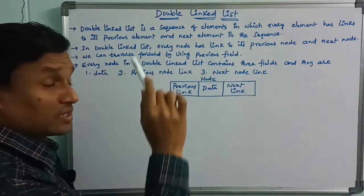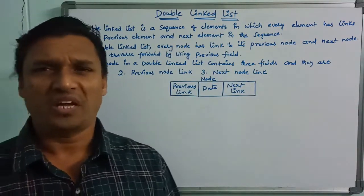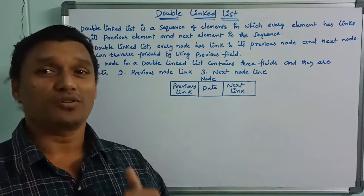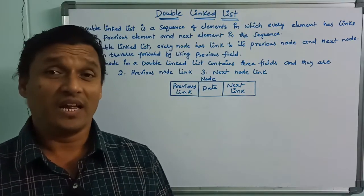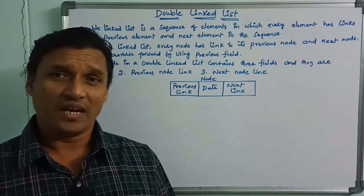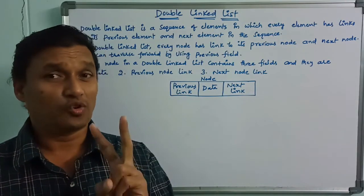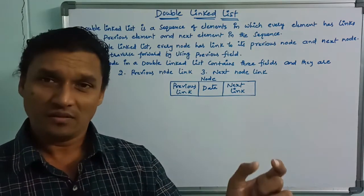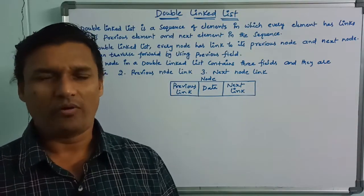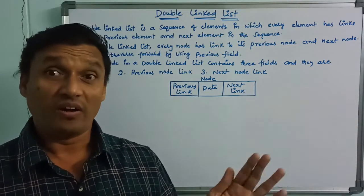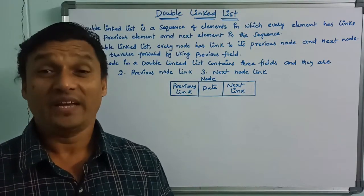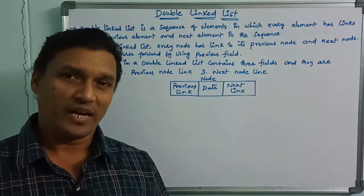We can traverse forward by using the previous field. Single linked list has only one direction traversal. Single linked list each node has two fields: one data field and another one link — the next link. It allows one direction traversing, only forward direction.